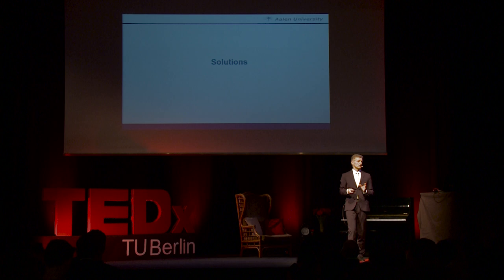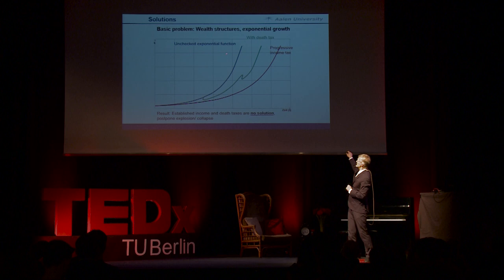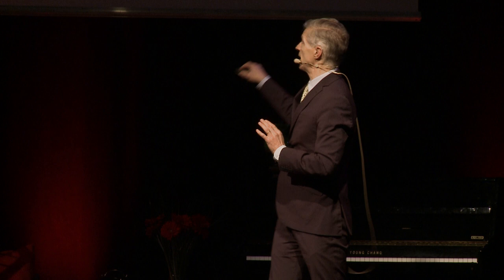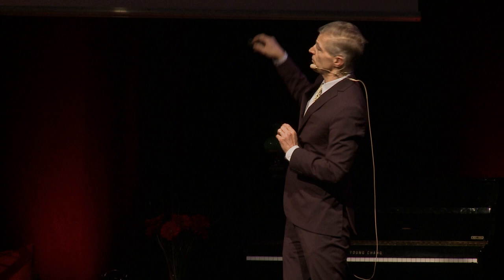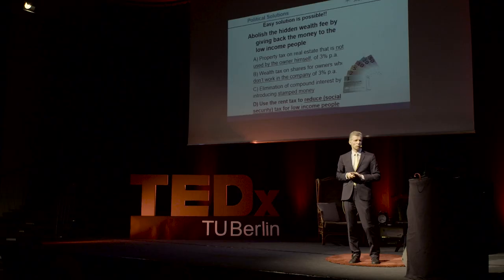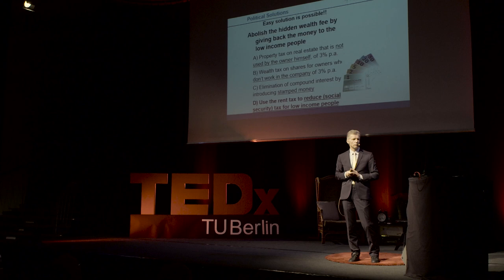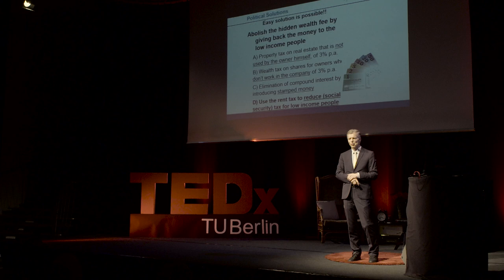What's the solution? It's very simple. The basic reason is the unchecked exponential function — we just have to stop it. A death tax is not enough, a progressive income tax isn't enough either. We just have to abolish the hidden wealth fee in everyday transactions by giving back the money to where it comes from — to normal people or to low-income people.